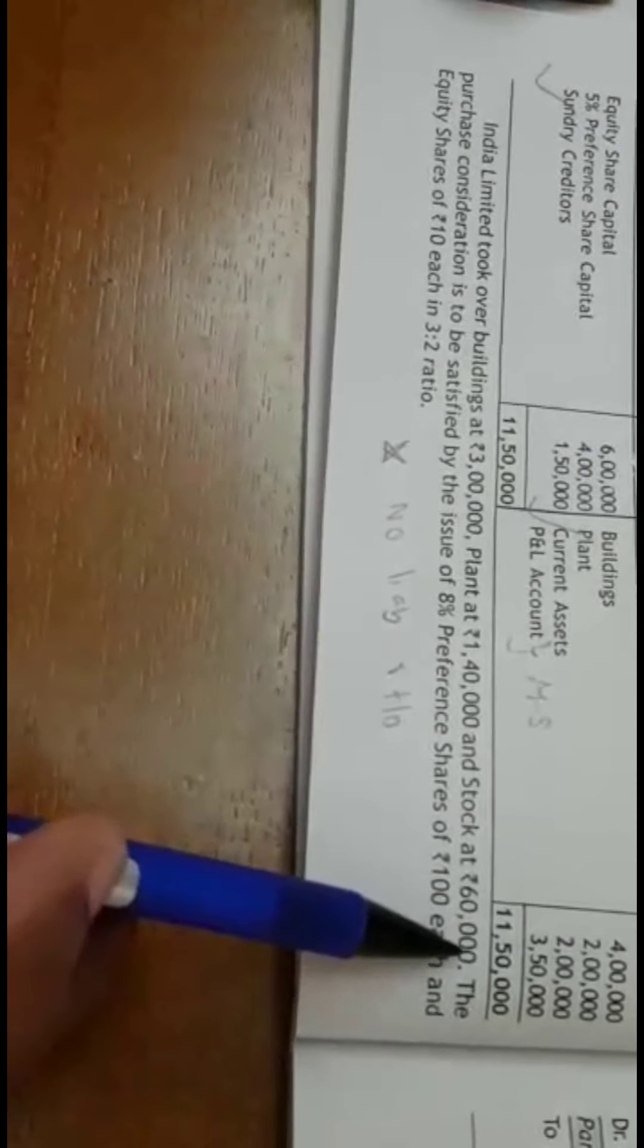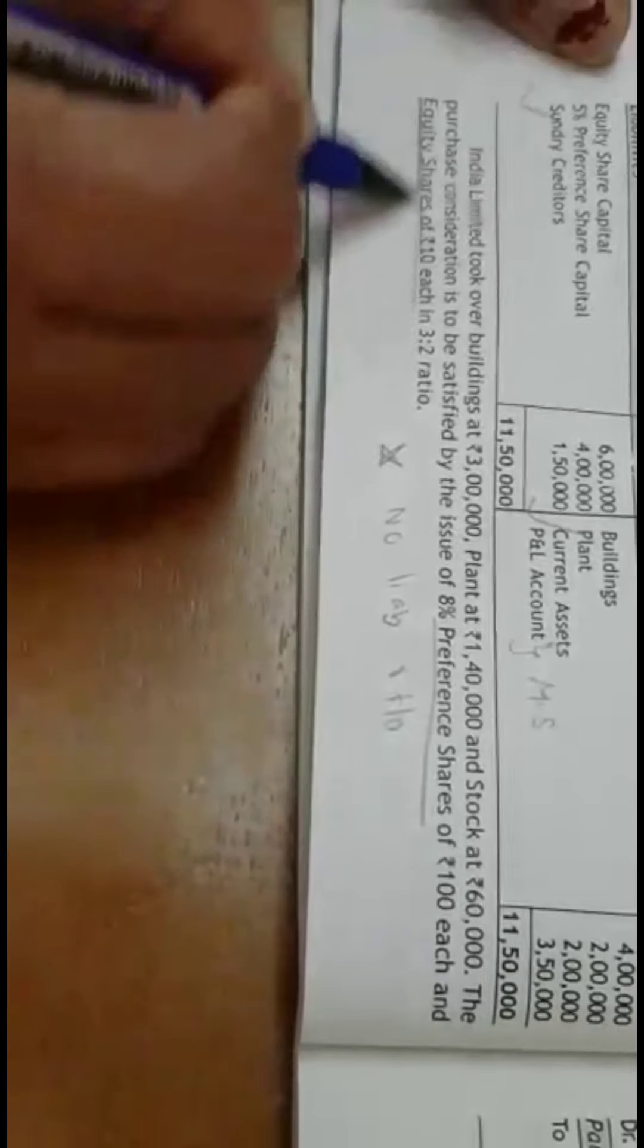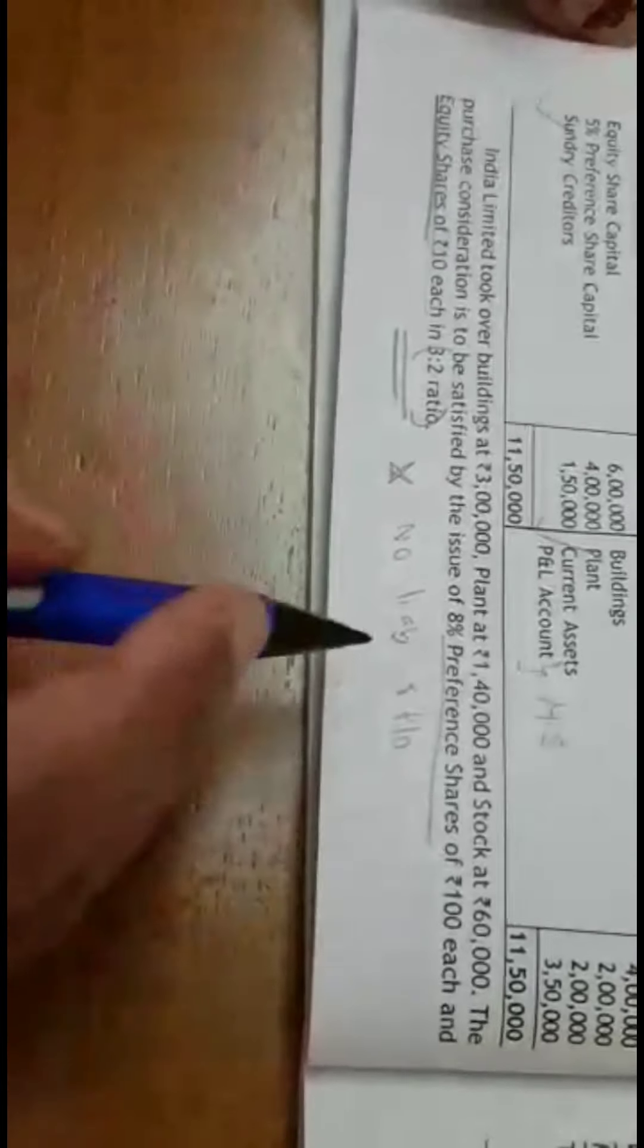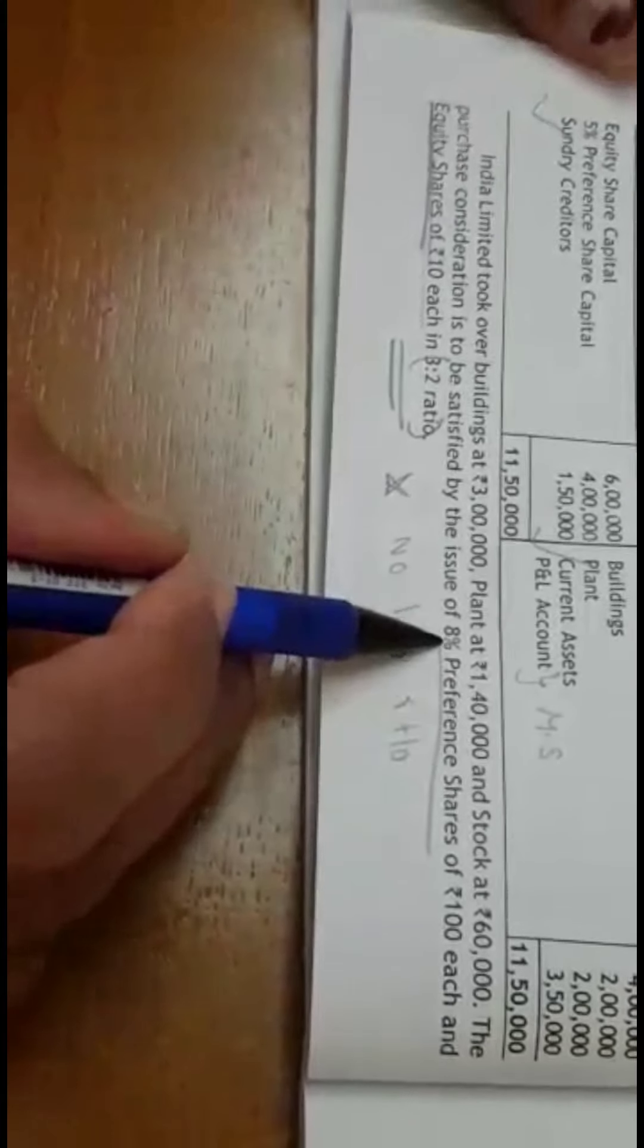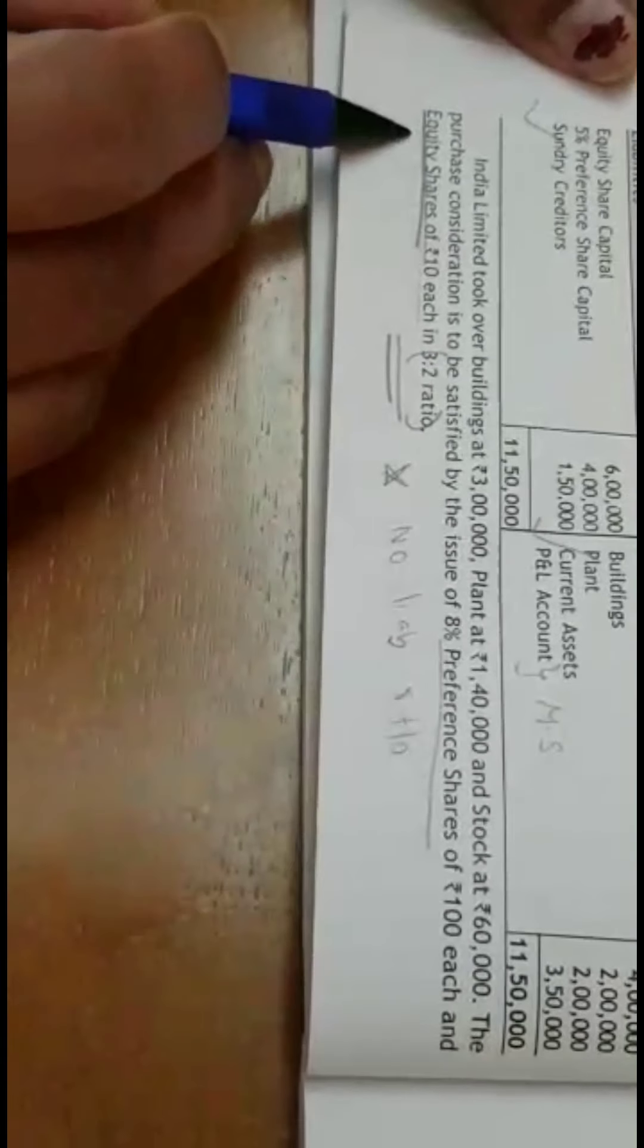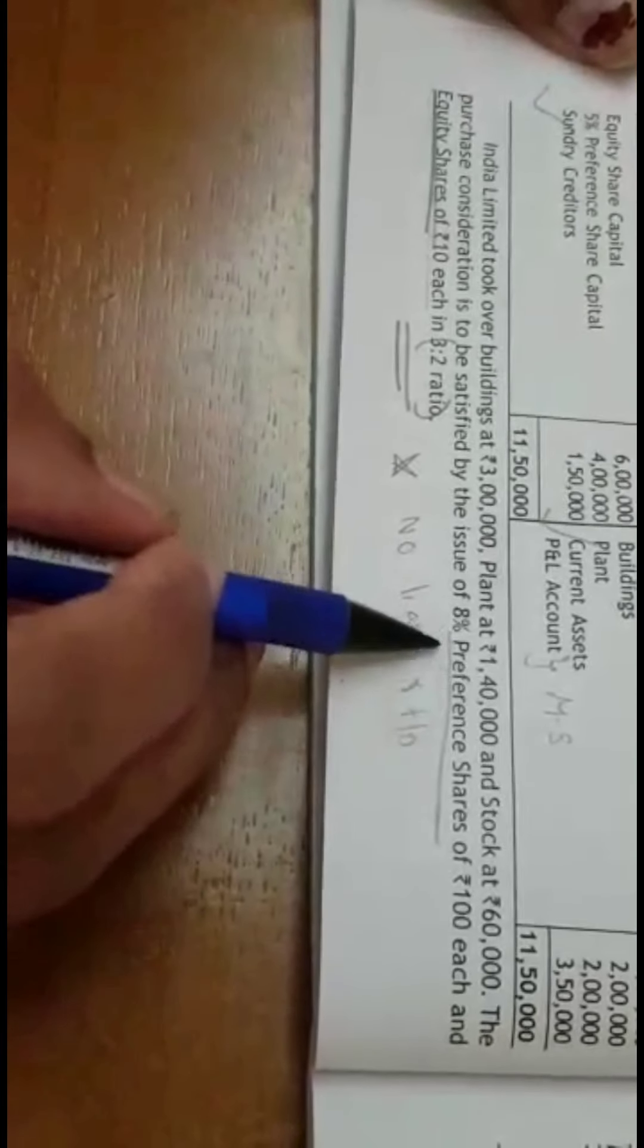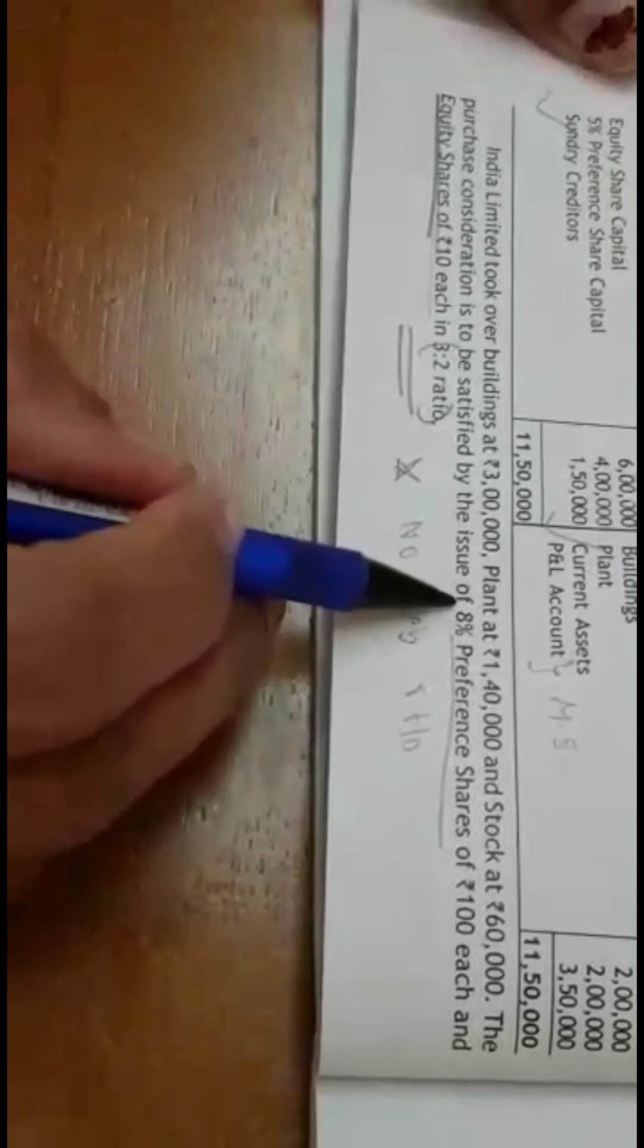The PC is to be satisfied by the issue of 8% preference shares of Rs. 100 each and equity shares of Rs. 10 each in the ratio of 3 is to 2. So this is the new calculation in this problem. PC is paid in the form of 8% preference shares and also in the form of equity shares.